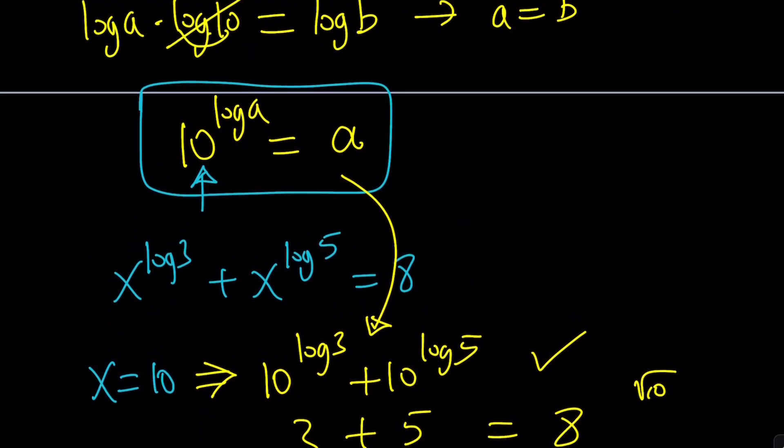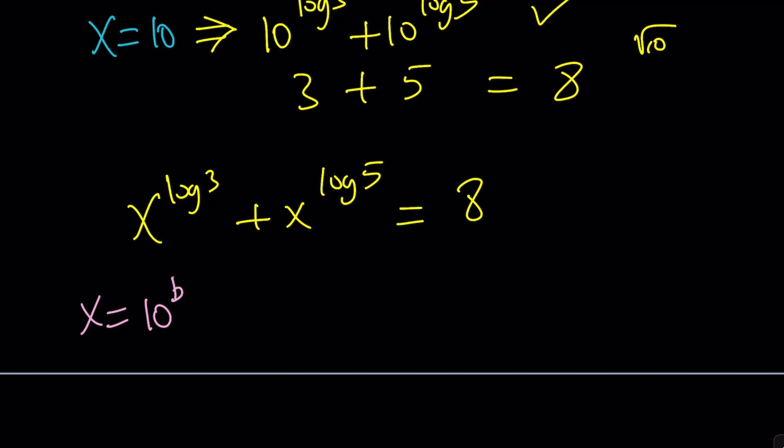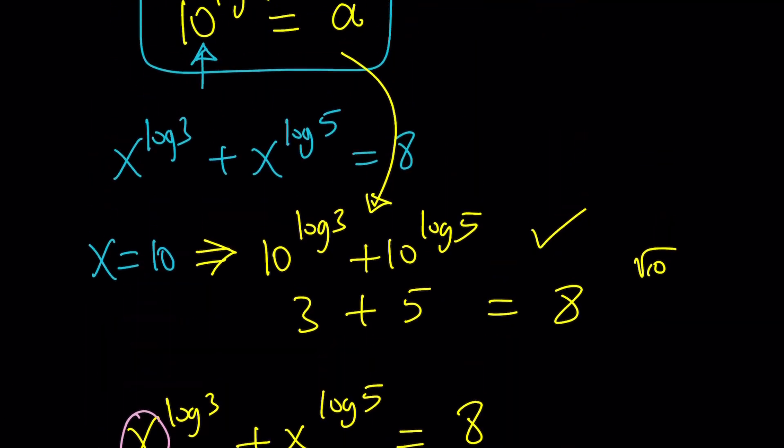Because we already used a. Did I use b as well? Well, let's use c then. I want to use something that I didn't use. So here we get 10 to the power c to the power log 3 plus 10 to the power c, again I'm replacing x with that, to the power log 5 is equal to 8. Now, this is a little far from using that identity, but not too far.